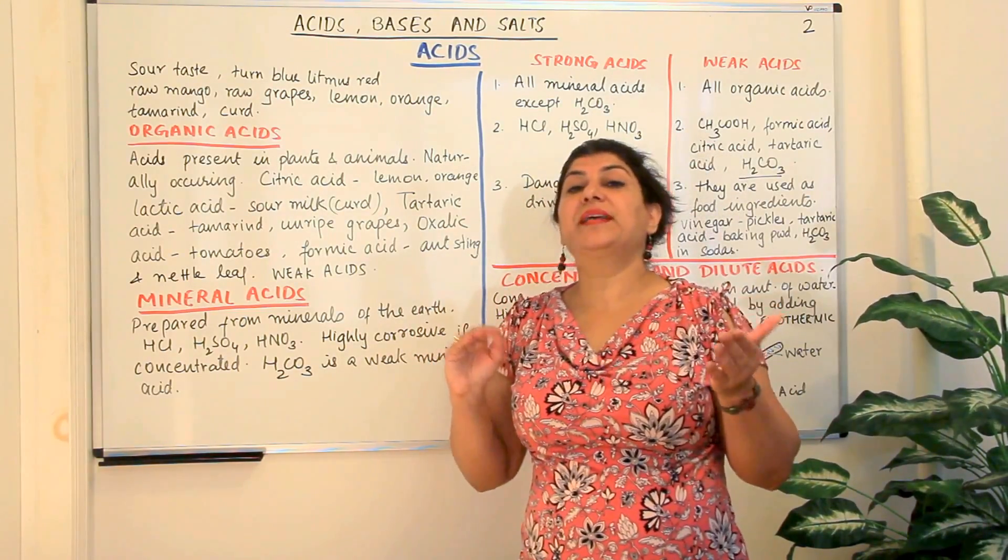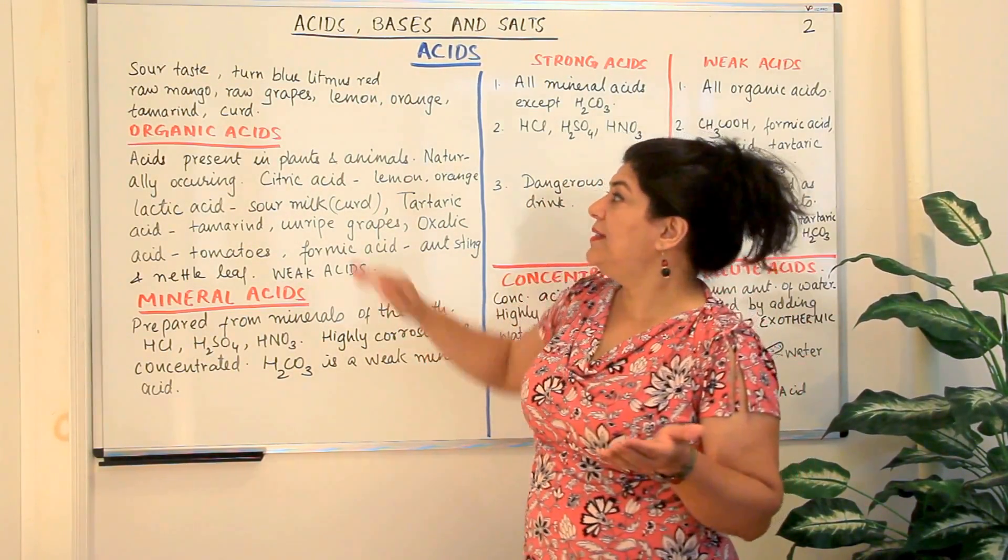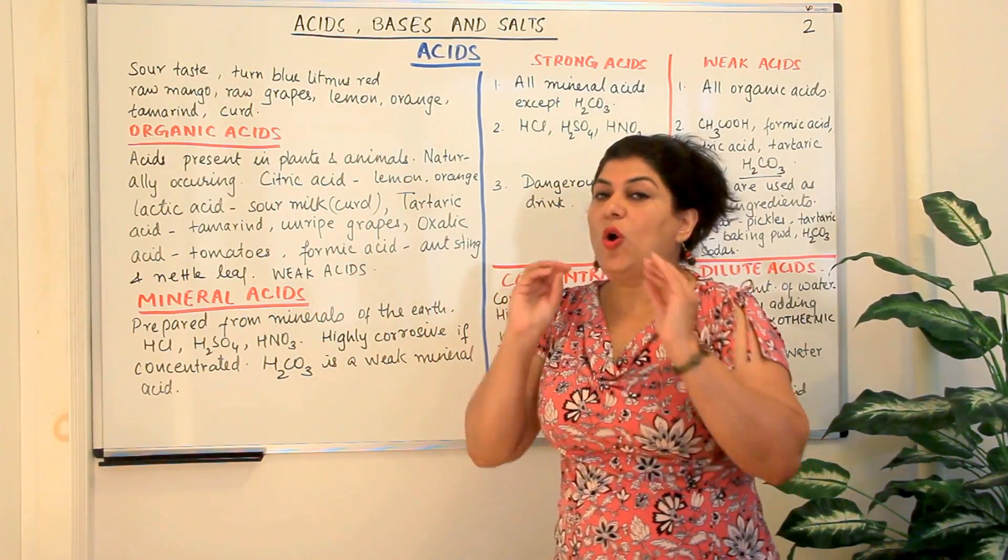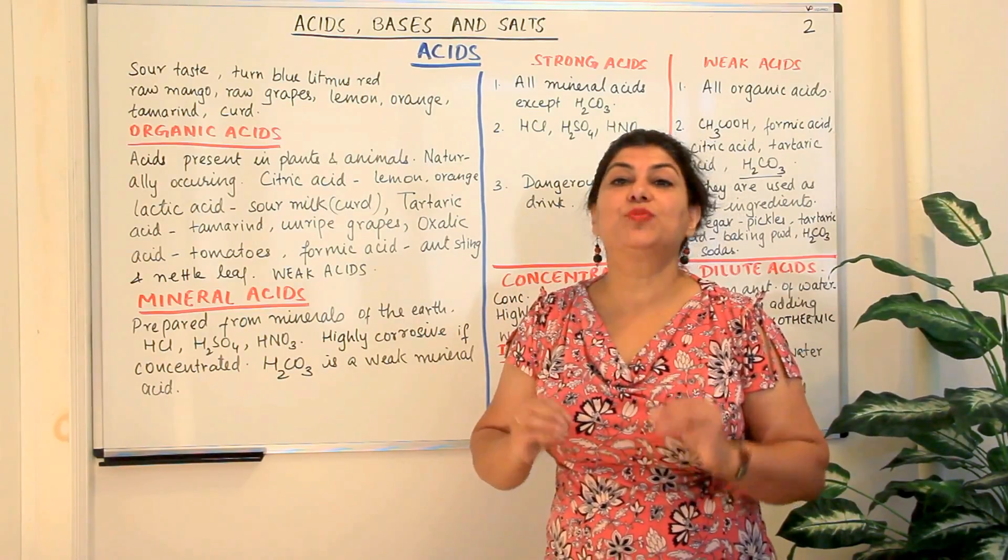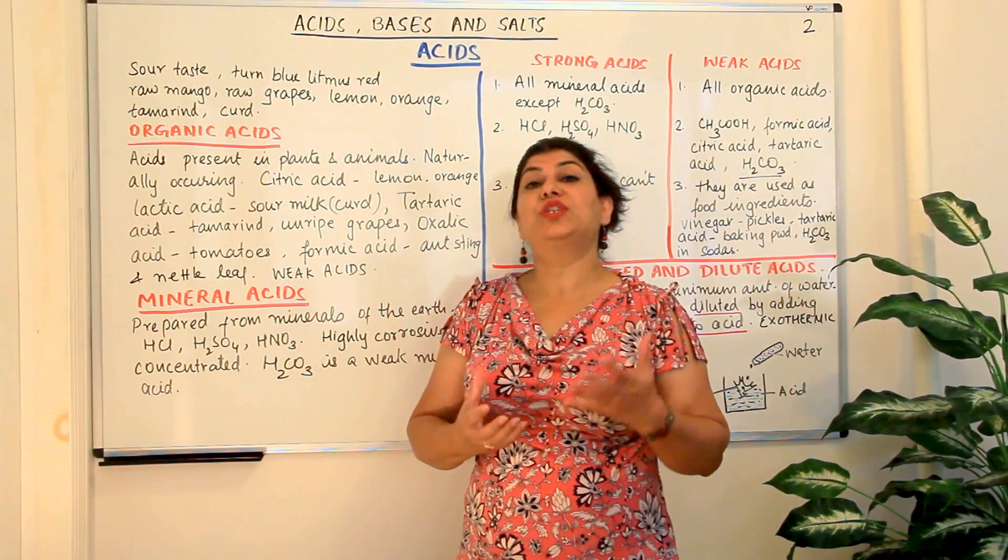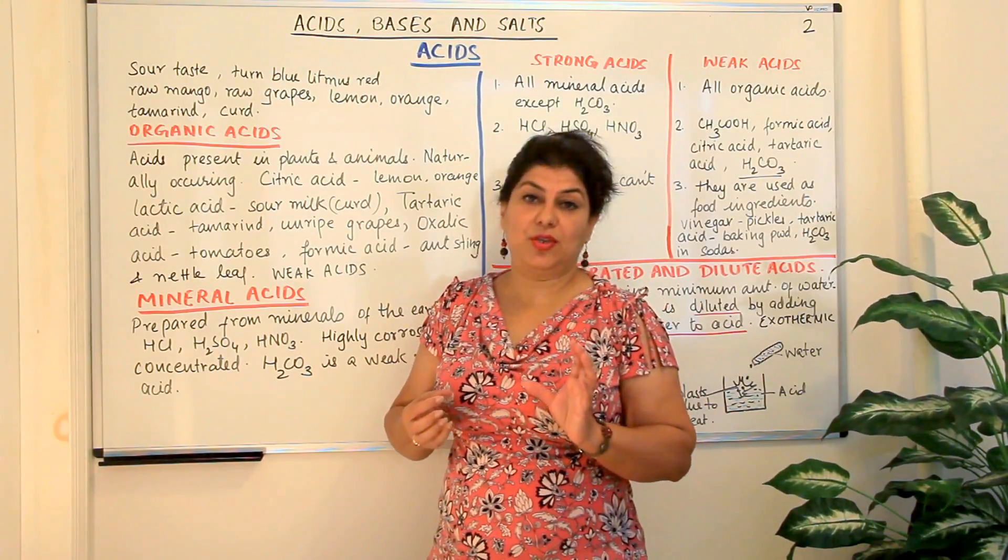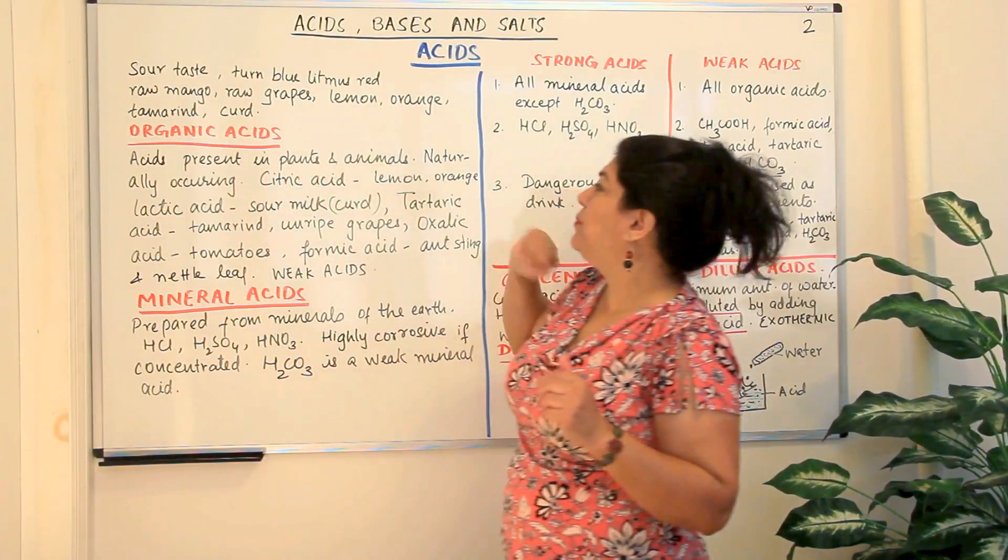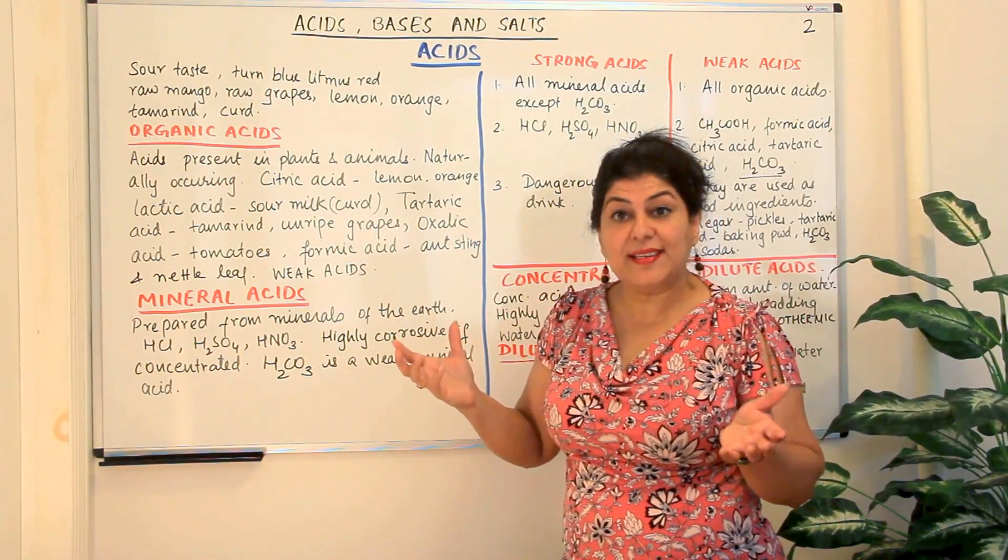Acids can be categorized into two types. One is organic acids and the other is mineral acids. As the name suggests, organic acids are those acids which are found in organisms, that is those acids which are present in plants and animals or which are obtained from plants and animals. So acids which are present in plants and animals are called organic acids.